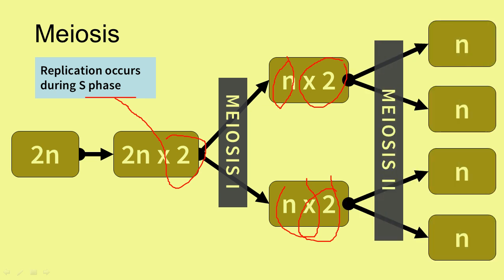After meiosis two, the sister chromatids separate, and each cell is not only haploid or N, but chromosomes are single. So in meiosis one, homologous chromosomes are separated, and in meiosis two, chromatids are separated.